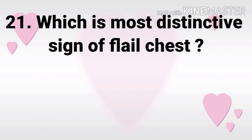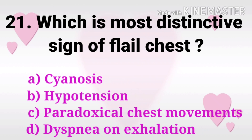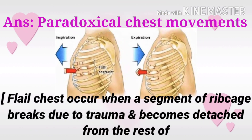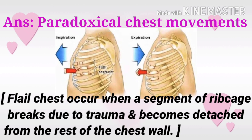Question 21: Which is the most distinctive sign of flail chest? The options are cyanosis, hypotension, paradoxical chest movements, and dyspnea on exhalation. The answer is paradoxical chest movements. Flail chest occurs when a segment of the ribcage breaks due to trauma and becomes detached from the rest of the chest wall.